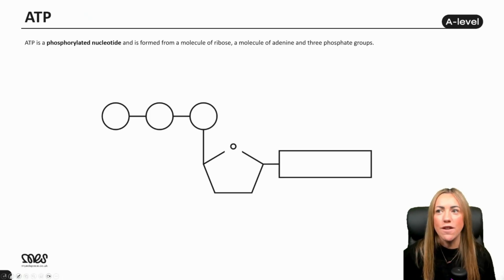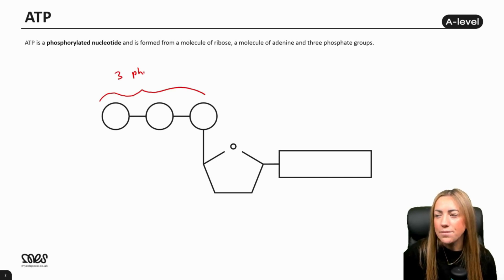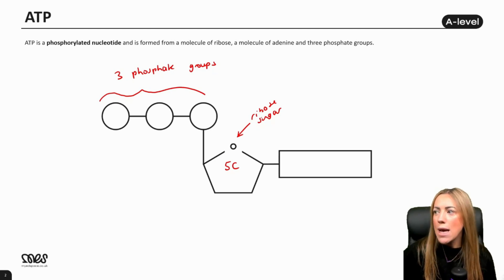Let's look at the structure first. ATP is a phosphorylated nucleotide, formed from ribose, a molecule of adenine, and three phosphate groups. These are the three phosphate groups. This is our ribose sugar, which is a five carbon sugar, so we can also refer to it as a pentose sugar.